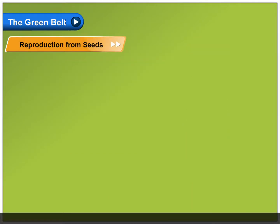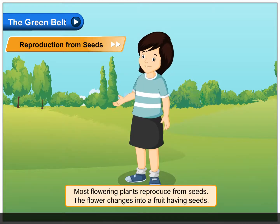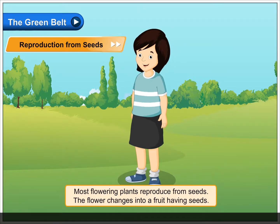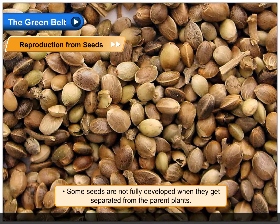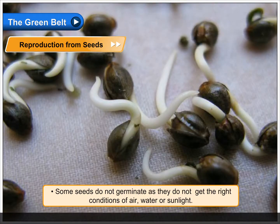Reproduction from seeds. Most flowering plants reproduce from seeds. The flower changes into a fruit having seeds. Some fruits have one seed, while some have more. All seeds do not grow into new plants because some seeds are not fully developed when they get separated from the parent plants. Some seeds do not germinate as they do not get the right conditions of air, water, or sunlight.